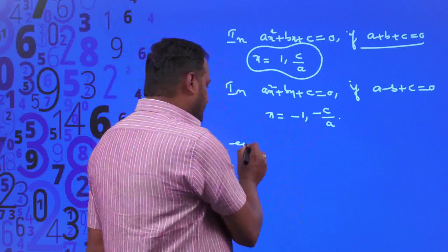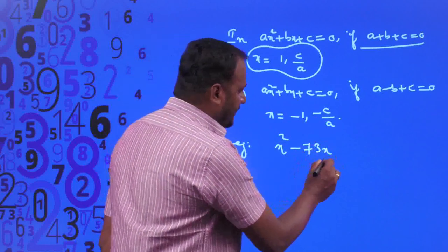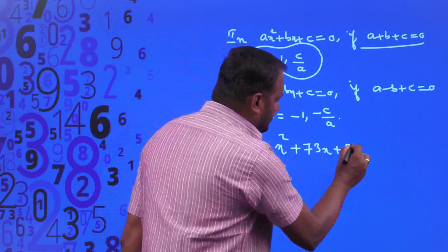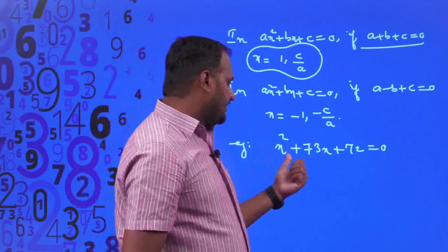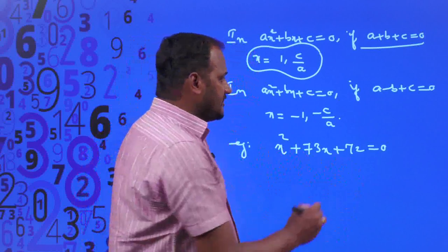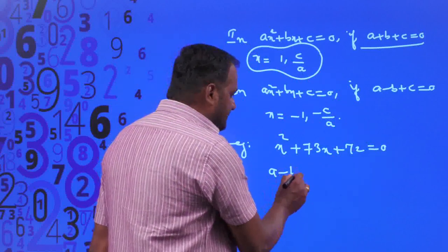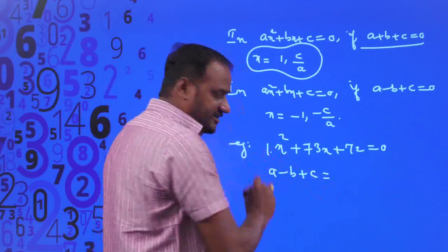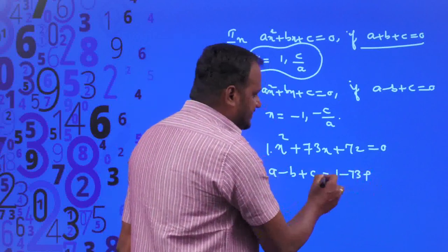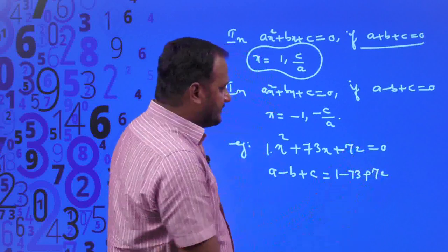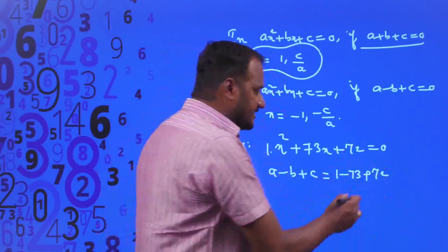For example, consider the quadratic equation x² + 73x + 72 = 0. Compare this with the standard form Ax² + Bx + C = 0 and find A minus B plus C. Here A = 1, B = 73, C = 72. When you add 1 - 73 + 72, you get 1 + 72 = 73 minus 73, which equals 0.